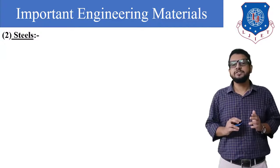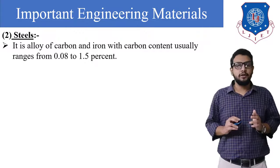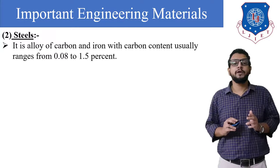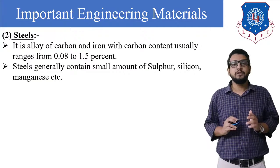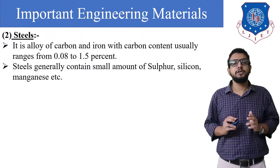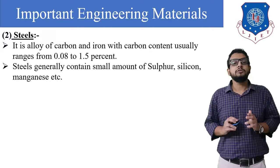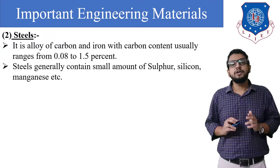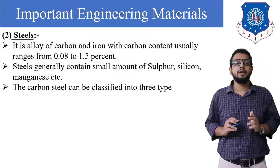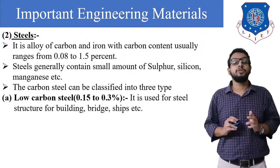Second is steel. It is an alloy of carbon and iron with carbon content usually ranging from 0.08% to 1.5%. This percentage value you need to keep in mind. Steel generally contains small amounts of sulfur, silicon, and manganese. Carbon steel can be classified into three types.